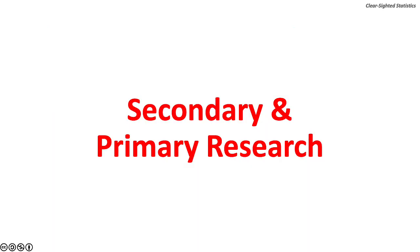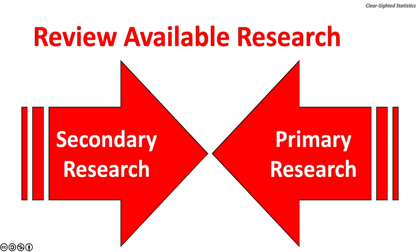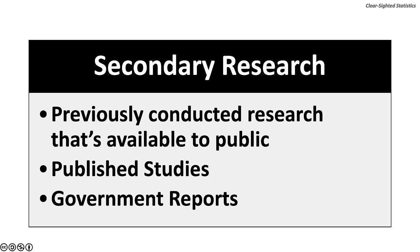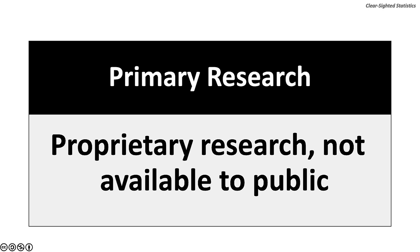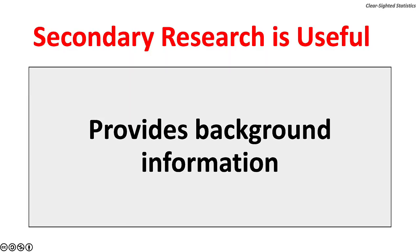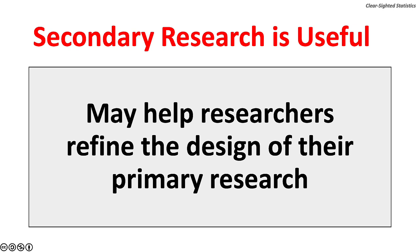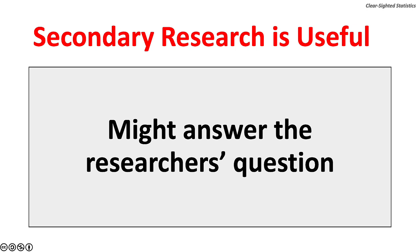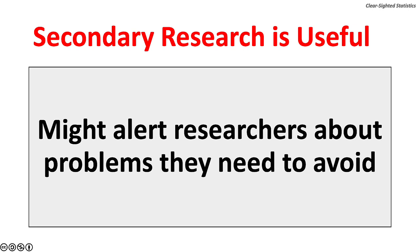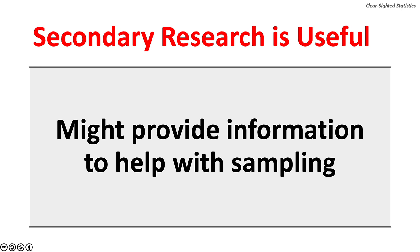Let's turn to secondary research and primary research. After the research question has been formulated, researchers review available secondary and primary research. Secondary research is previously conducted research that is available to the public, including published studies and government reports. Primary research is proprietary research that is not available to the public. Secondary research can be very useful because it can provide background information, help researchers refine the design of their primary research, and may actually answer the researcher's question, eliminating the need for new primary research. It might also alert researchers about problems to avoid and provide information to help with sampling.